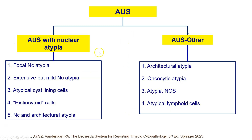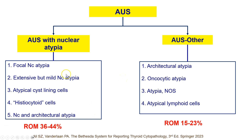So AUS is subclassified into AUS with nuclear atypia and AUS other. The risk of malignancy is significantly higher in AUS with nuclear atypia — about one third to almost half of cases turn out to be malignant, usually some variant of papillary thyroid carcinoma — as opposed to AUS other, where the risk of malignancy has been significantly lower.